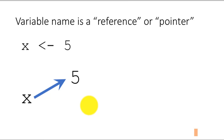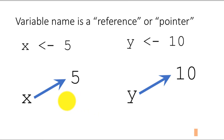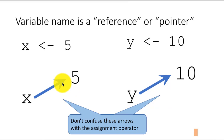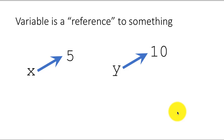Now this is not critically important, but I just thought I will mention it. Similarly, if I say y is 10, then y is a variable that is pointing to, separately, the constant 10. I am using arrows here — don't confuse these arrows for the assignment operator. These are just arrows for visual purposes, whereas this is actually the assignment operator. So a variable is a reference to something. Here x is a reference to the value 5, and y is a reference to the value 10.